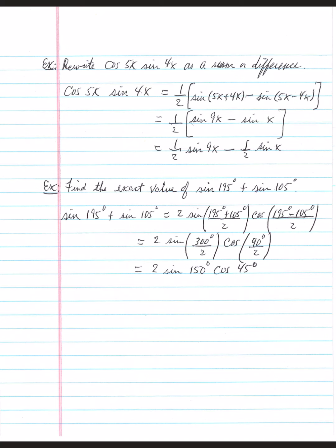Pay close attention to the order: cosine followed by sine has a specific expansion. Going the other way — sum to product — locate sine plus sine in the identities. The expansion is 2·sine((u+v)/2)·cosine((u−v)/2). For sine(195°) + sine(105°): (195 + 105)/2 = 300/2 = 150, and (195 − 105)/2 = 90/2 = 45. So this becomes 2·sine(150°)·cosine(45°).